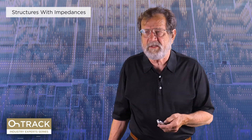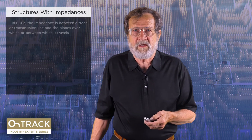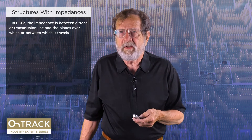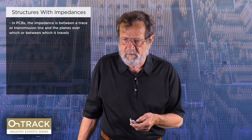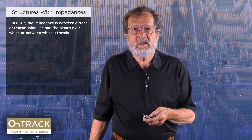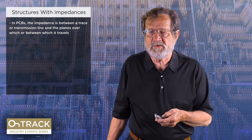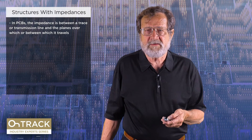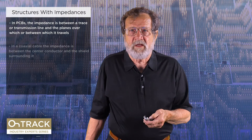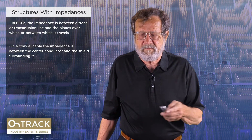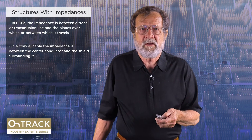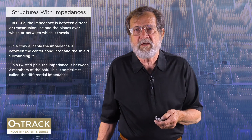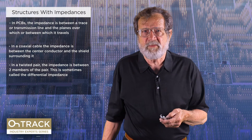Here are structures that have impedances we'll encounter designing printed circuit boards. A printed circuit board — which is what most of us are dealing with — it's a trace, which is the transmission line, and the plane or planes over which it travels. If we are on an outside layer of a board, it will be only one plane, and we call that microstrip. If it's in the middle of the board somewhere, there'll be two planes, one on each side of the trace, and that has the name stripline. In coaxial cable, we have a center conductor and then a surrounding shield, and the impedance is between the center conductor and the shield. Twisted pair, which we all are familiar with from wired ethernet, the impedance is between the two members of the pair.